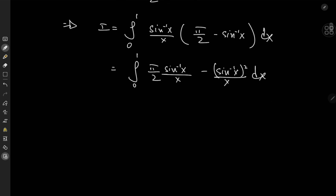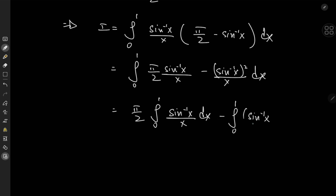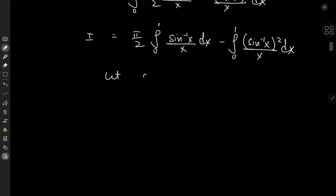We have a couple of nice-looking integrals by invoking the linearity of the integration operator: π/2 times the integral of arcsin(x)/x dx minus the integral from 0 to 1 of arcsin²(x)/x dx. We now invoke a substitution: let arcsin(x) = θ, which implies x = sin(θ) and dx = cos(θ) dθ.